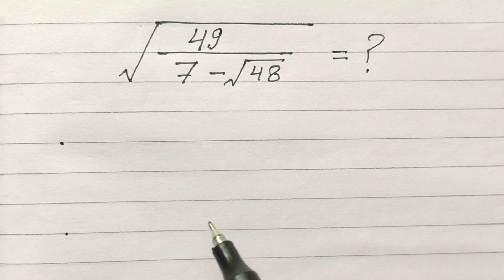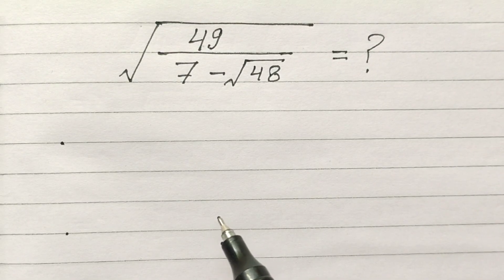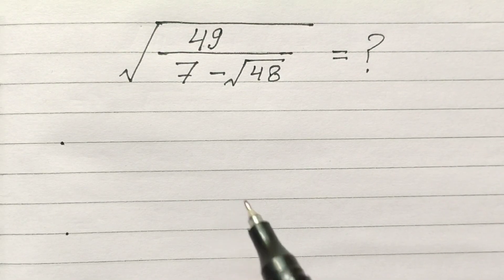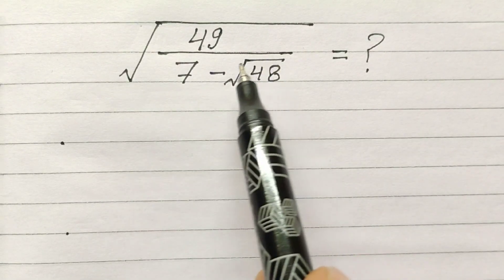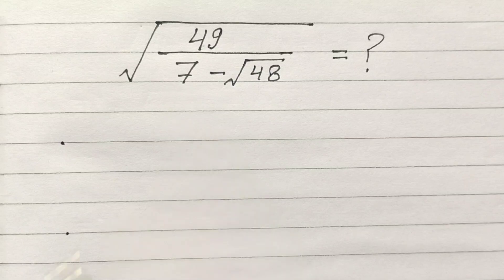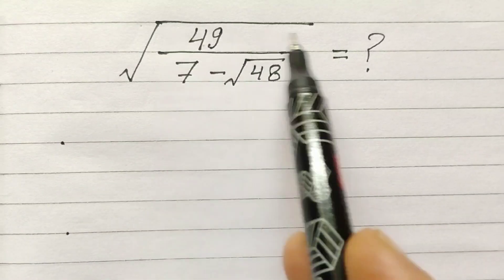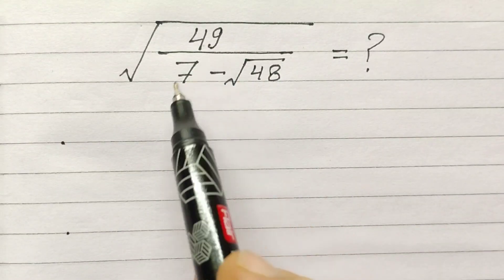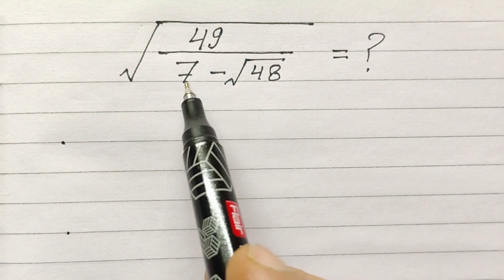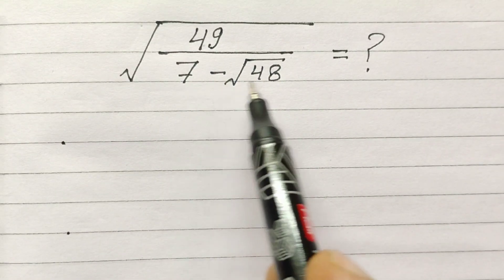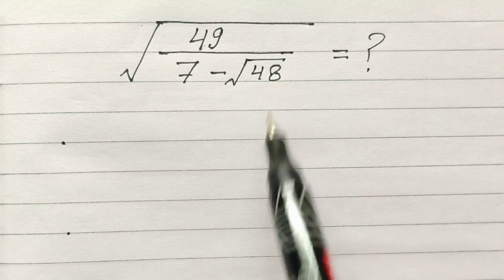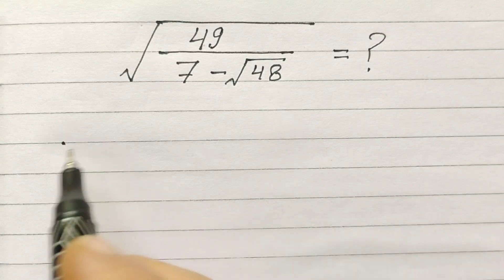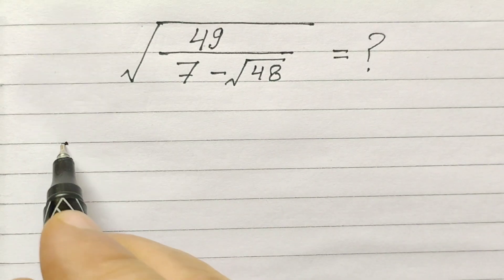Hi friends, welcome back to my channel. Today we have to simplify this problem: square root of 49 over 7 minus square root of 48. So let's start.